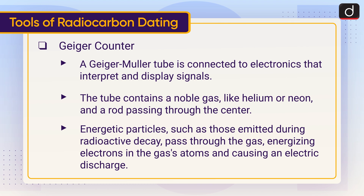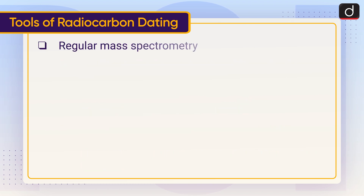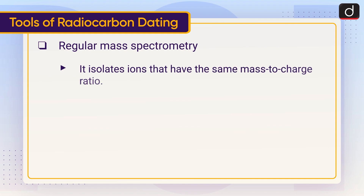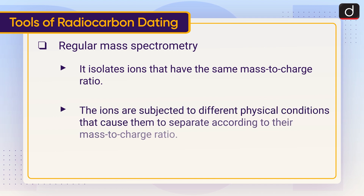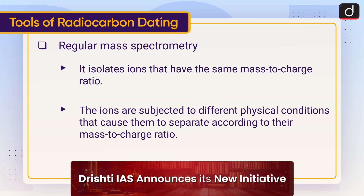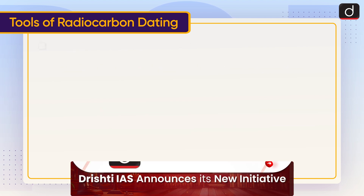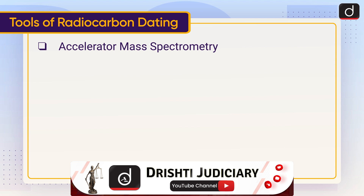Regular mass spectrometry isolates ions that have the same mass-to-charge ratio. The ions are subjected to different physical conditions that cause them to separate according to their mass-to-charge ratio.